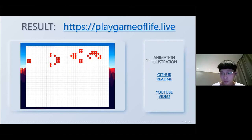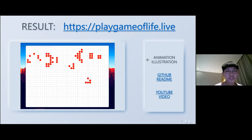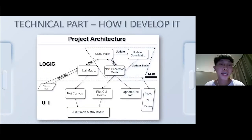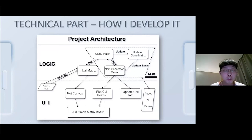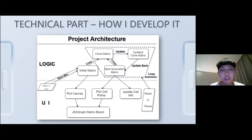They also provided me a YouTube video. Now let me turn to the technical part — how I built this project. The architecture can be divided into two parts: the logic part and the UI part. For the logic part, we have an initial matrix generated by the selected pattern or grid events from the user. When it starts, we copy the initial matrix to a clone matrix, then update the clone matrix based on the initial matrix following the rules of Game of Life. We then get the updated clone matrix and update it back as the next generation matrix, then copy it again to the clone matrix and repeat the loop.